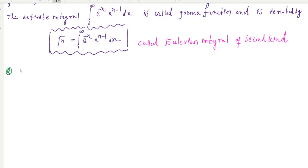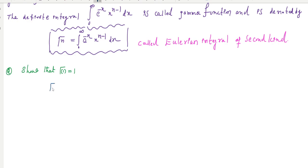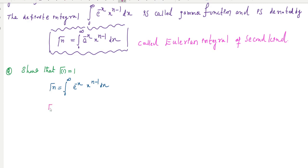We know the definition of the gamma function: gamma(n) equals the integral from 0 to infinity of e^(−x) times x^(n−1) dx. Putting n equal to 1, we get the integral from 0 to infinity of e^(−x) times x^0 dx, where x^0 equals 1. So this becomes the integral from 0 to infinity of e^(−x) dx. Integrating gives [−e^(−x)] from 0 to infinity.